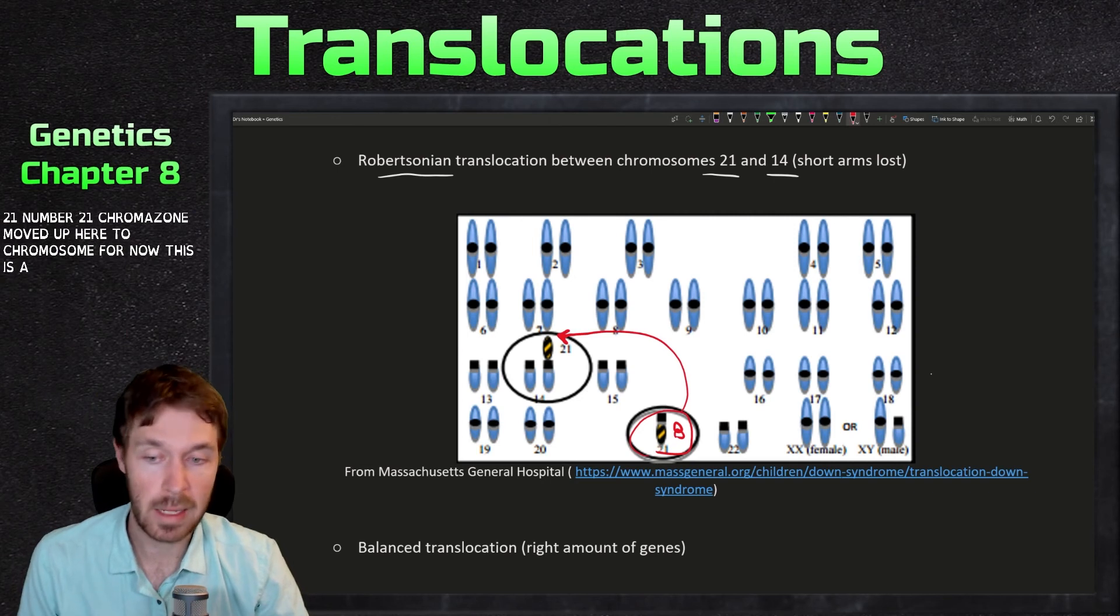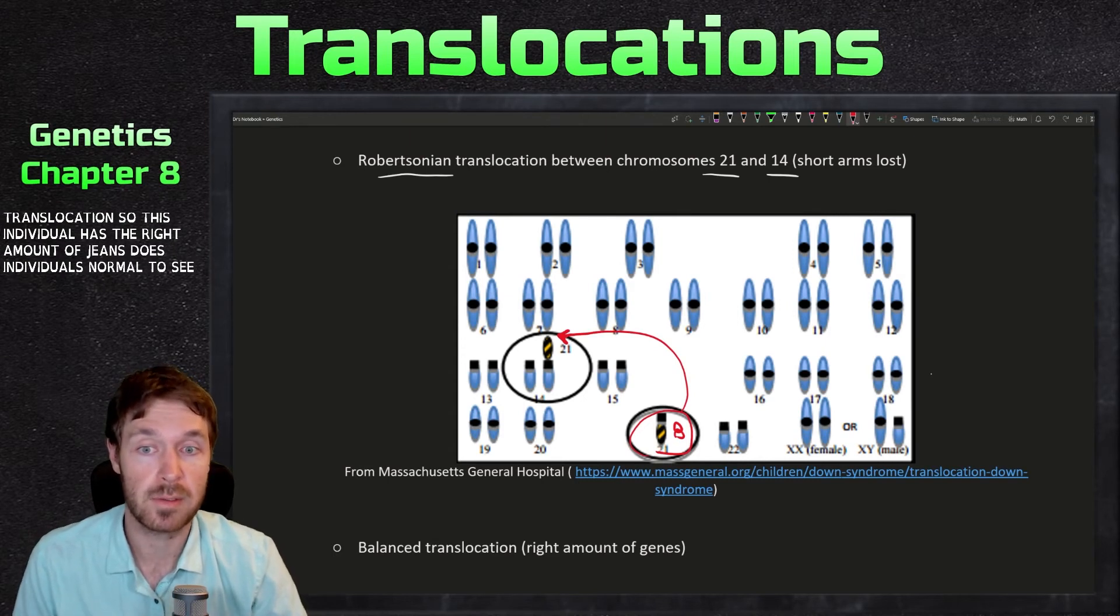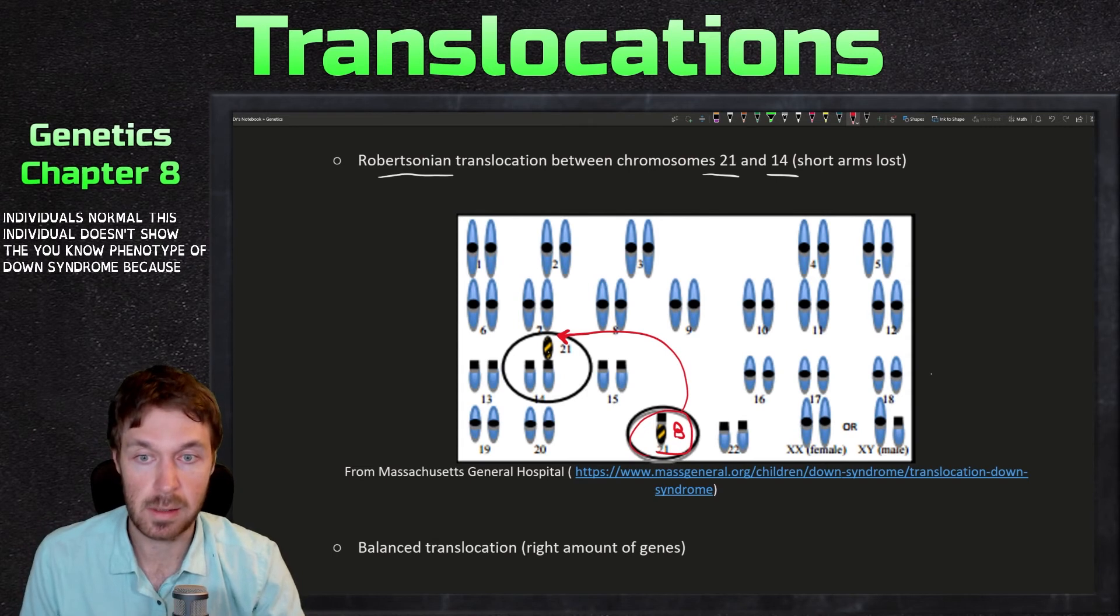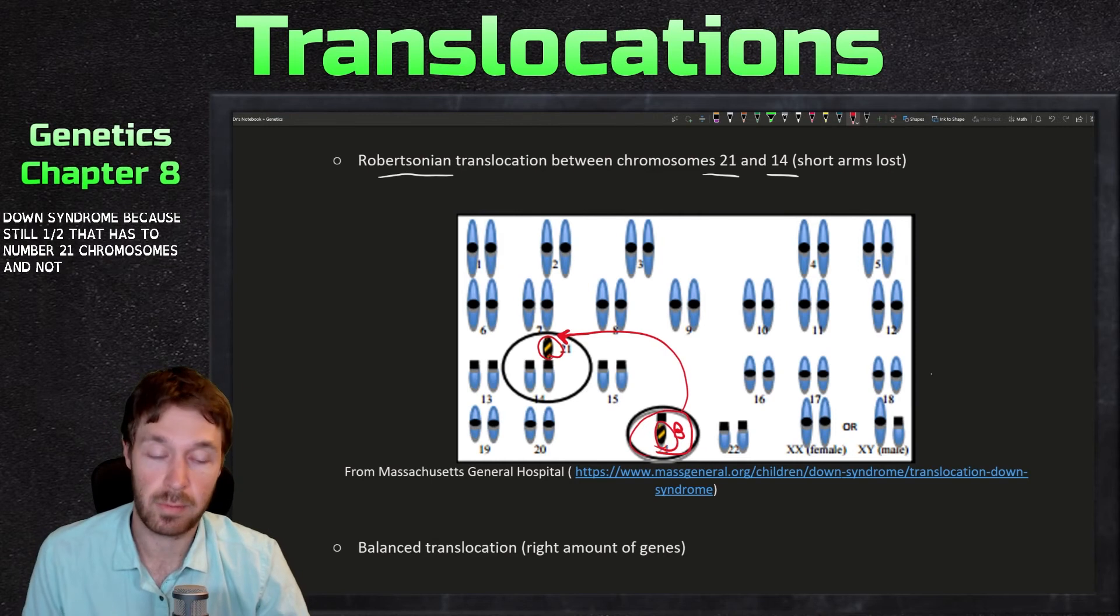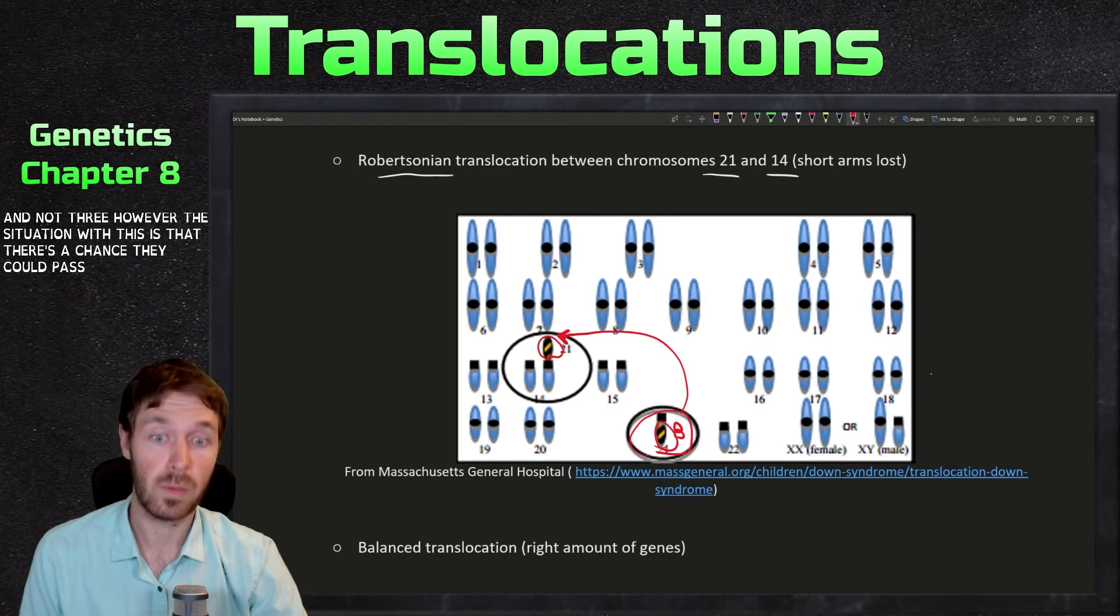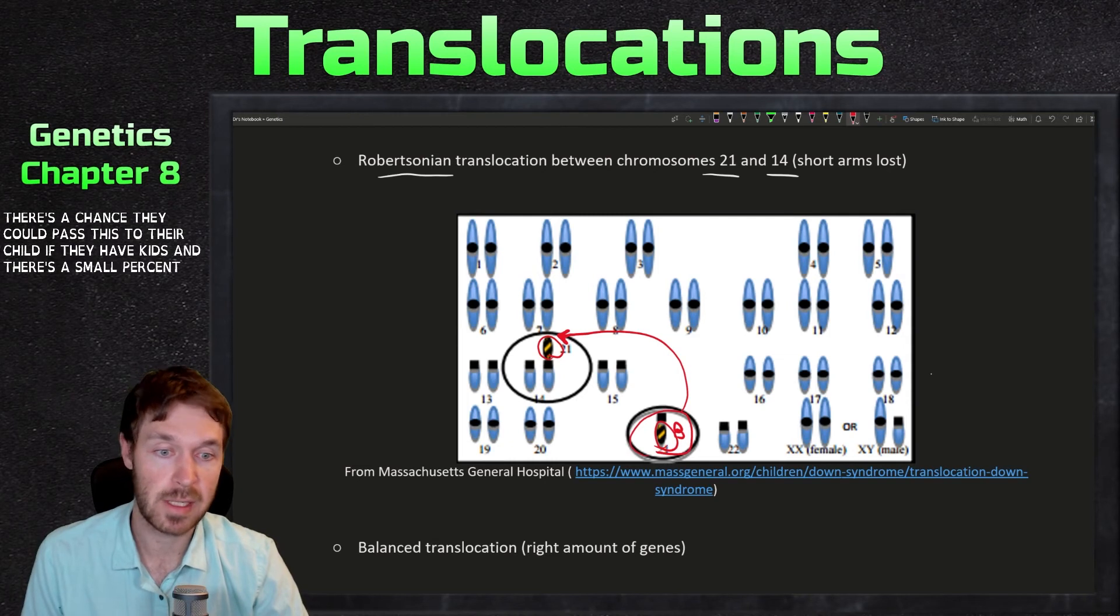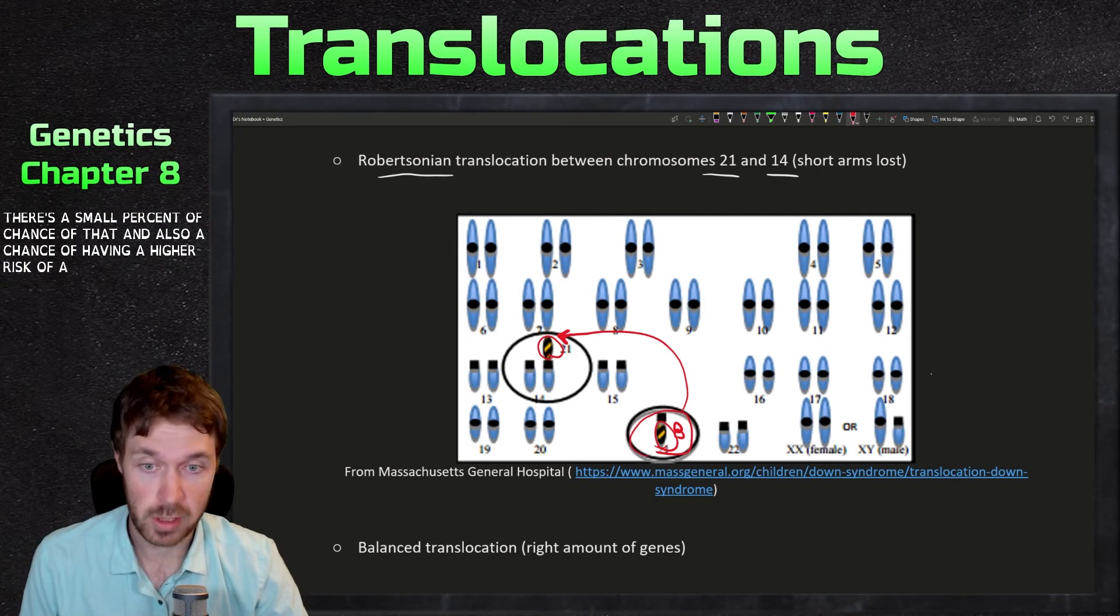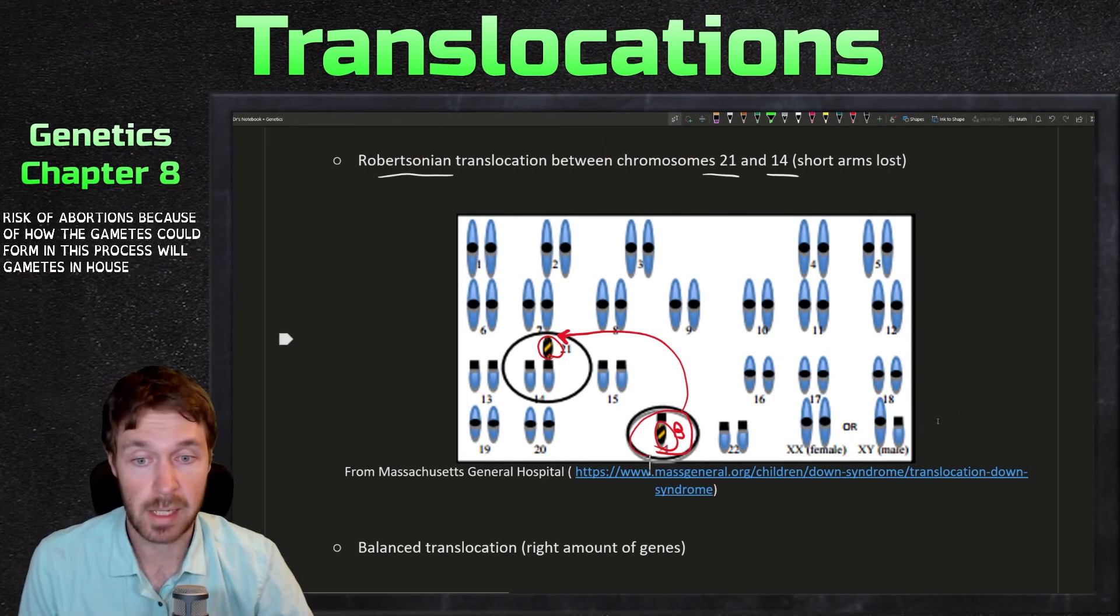Now this is a balanced translocation. So this individual has the right amount of genes. This individual is normal. This individual doesn't show the phenotype of down syndrome because still one, two, it has two number 21 chromosomes, not three. However, the situation with this is that there's a chance they could pass this to their child if they have kids. And there's a small percent chance of that and also a chance of having higher risk of abortions because of how the gametes could form in this process and how the zygotes could form.